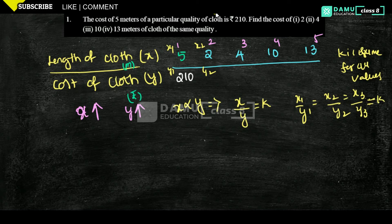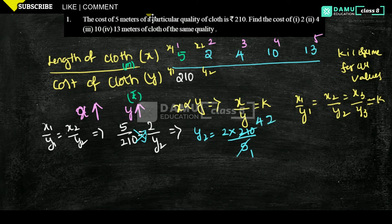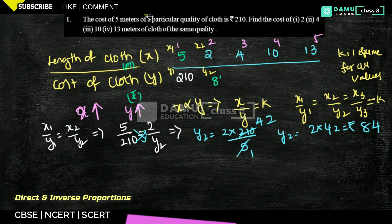Using X1 by Y1 equals X2 by Y2, with X1 = 5 and Y1 = 210, and X2 = 2, we solve for Y2. Cross-multiplying: Y2 equals 2 into 210 by 5, which gives 42 into 2, so Y2 equals 84 rupees. The cost of 2 meters of cloth is 84 rupees.